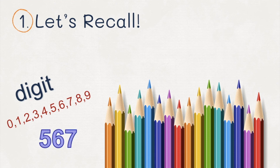So in this number, 567, can you tell how many digits are there in this number? There are three digits: the digits five, six, and seven.